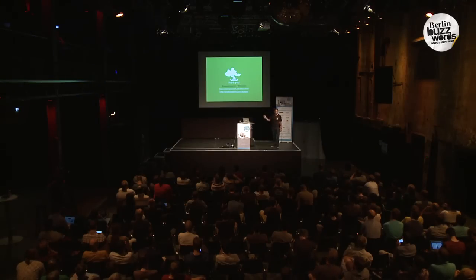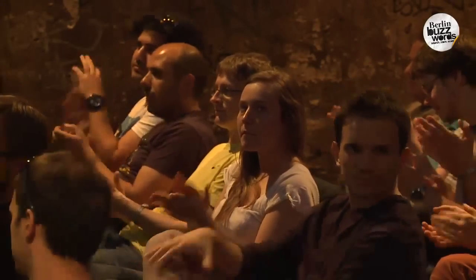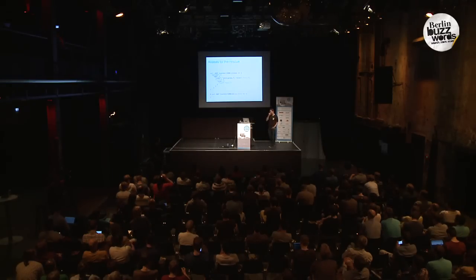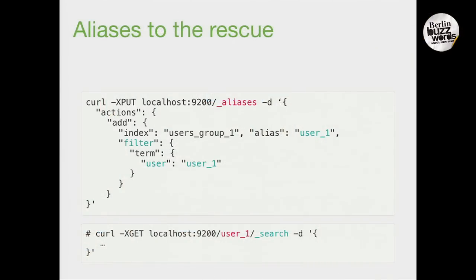We covered 43 slides in about 24 minutes, so we have lots of time for questions. A question on combining the alias filter model with monthly index rotation — yes, this is possible using the index template feature in fairly recent versions of Elasticsearch. Adding aliases during index creation is a recent feature; once you can do it during creation, you can also include it in templates.